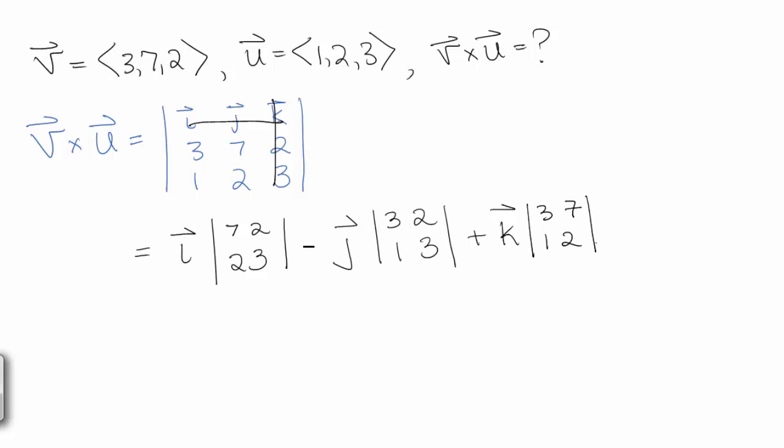Now if you've done determinants of 2 by 2 matrices before, what we're going to do with each of these blocks will look familiar. We multiply diagonally down and then diagonally down the other way. First one we add, the second one we subtract. So we have the I component 7 times 3 minus 2 times 2.